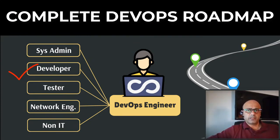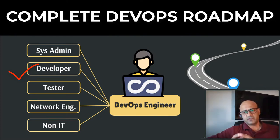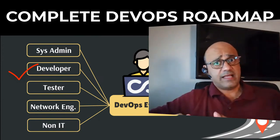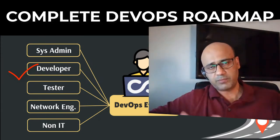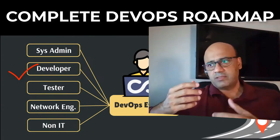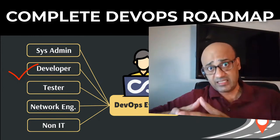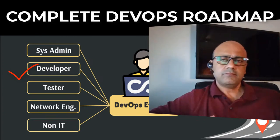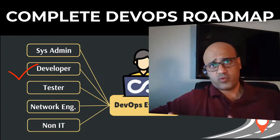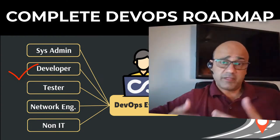If you're a software developer, you already have a good background in software development — the important development side of DevOps. But you're probably missing skills like server management. You need to start by learning about virtual machines, how to configure them, load balancing, and the infrastructure side. Most modern applications run on the cloud, so learning cloud infrastructure deployment is your starting point. Once you have the foundation, you can learn about containers on top of virtual machines, how to run applications in containers, and how to run containers on Kubernetes. Your programming skills will be a great help in automation.